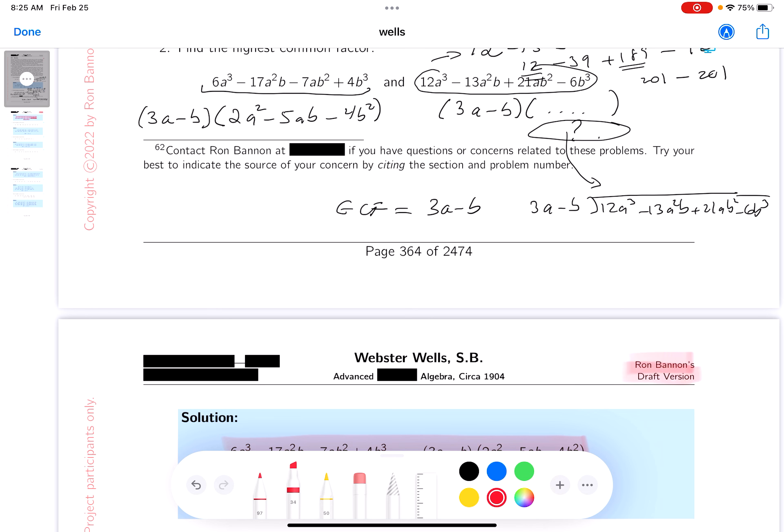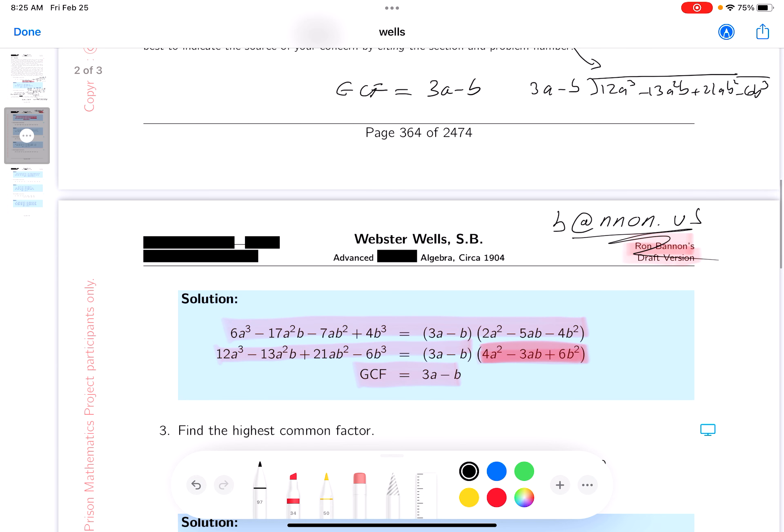All right, so I want to point out my name is Ron Bannon, and my email address is Bannon. I'll write that down for you: b as in boy, the at symbol, n-n-o-n dot us. And again, if you have questions or concerns related to improving the document, I would appreciate hearing from you. Thank you.